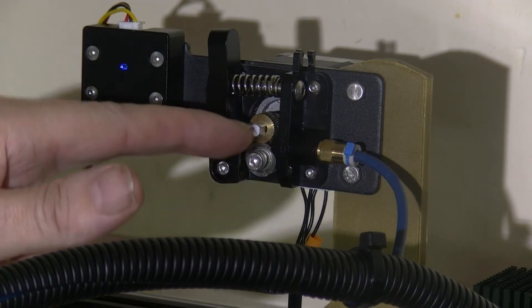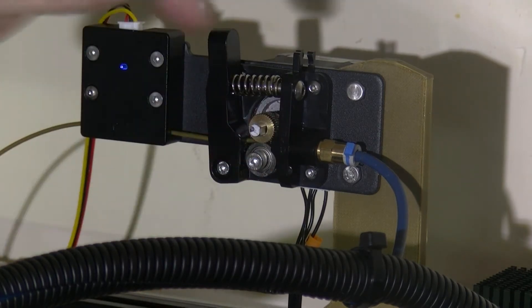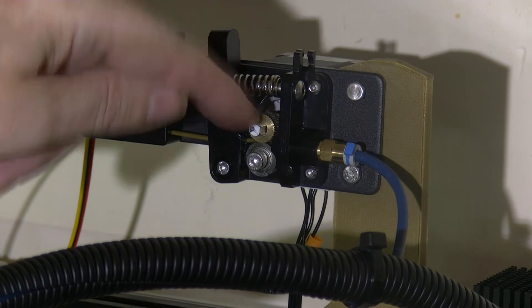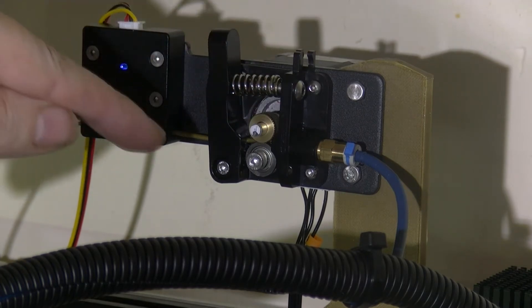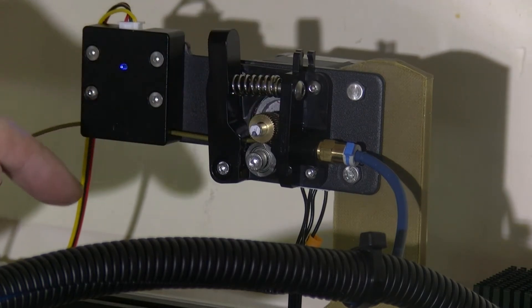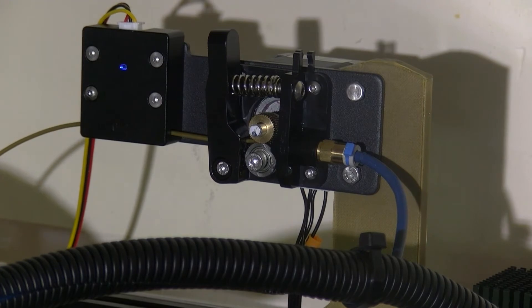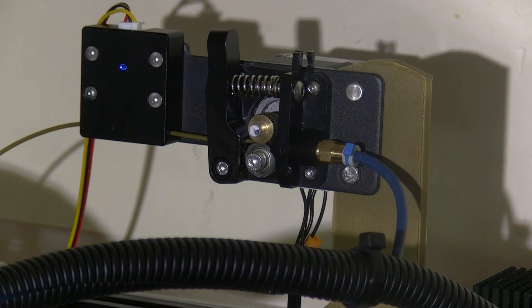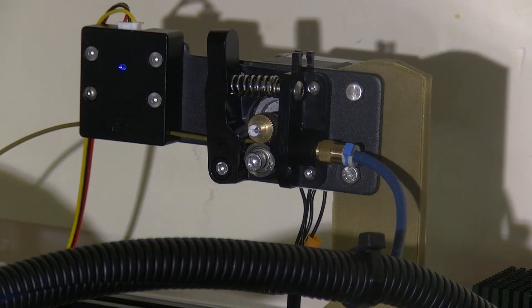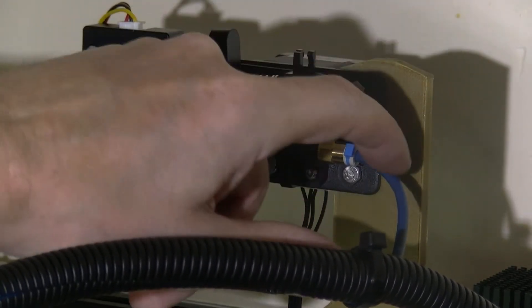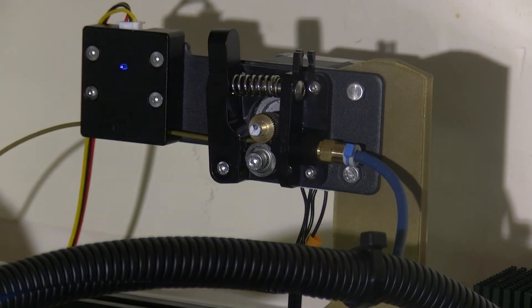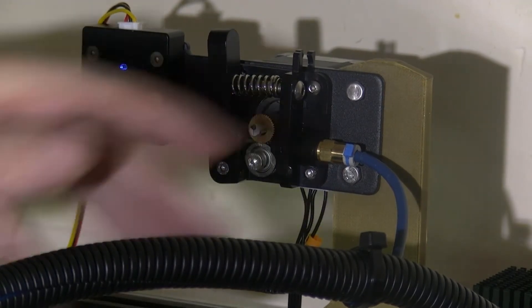This does have a flat shaft on it—well, a flat side on this—so make sure at least one of the... there's two grub screws on here. Yes, and it is going quickly. And now it'll go slowly.